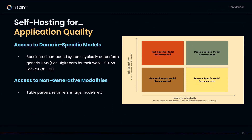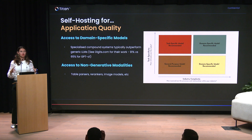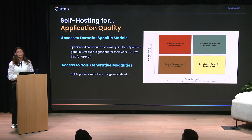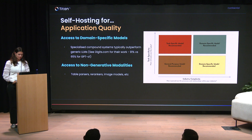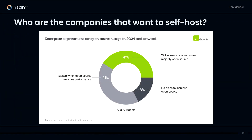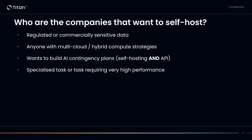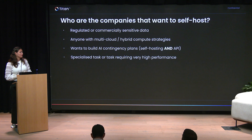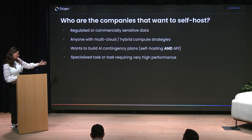When self-hosting, you also get access to a far greater range of models — things like table parsers, re-rankers, and all the components you'd have around your big language model — in a way that a big hosted LLM provider might not provide. That's why about 82% of enterprises are either increasing or planning to increase their use of open source, for these independence, data privacy, and application quality reasons. So if you have regulatory or commercially sensitive data, complex compute environments, want AI contingency plans, or have a specialized high-performance task, it's a fairly good idea to invest in self-hosted capabilities.